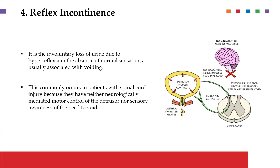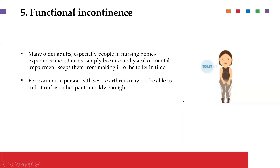Reflex incontinence is highly related to urge incontinence. Here, you have loss of ability to control the bladder due to hyperreflexia, which occurs from abnormal sensation in the micturition cycle. This is seen in patients with spinal cord injuries, because they lose the neurologically mediated motor control of the detrusor muscle and the sensory awareness of the need to void. The interplay between the bladder knowing when to contract is lost, resulting in hyperreflexia — the bladder keeps being pushed to remove urine.